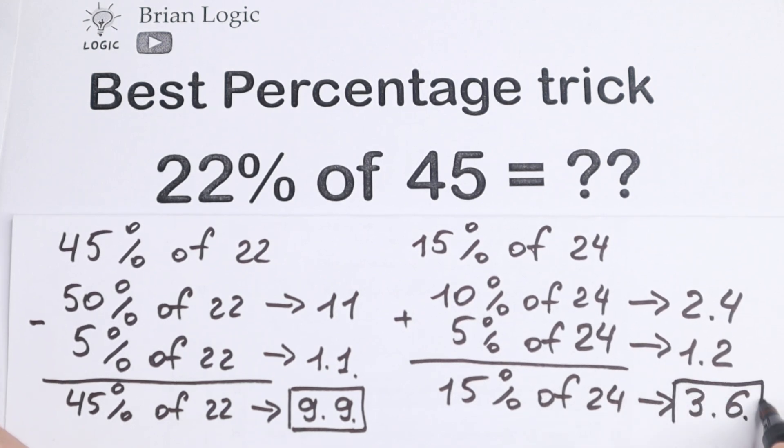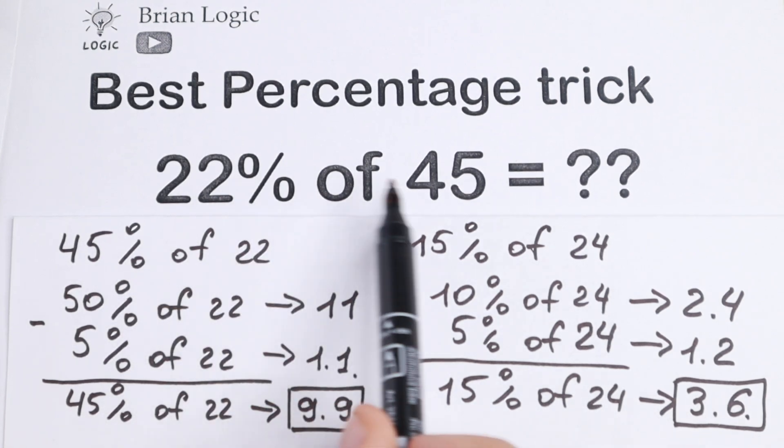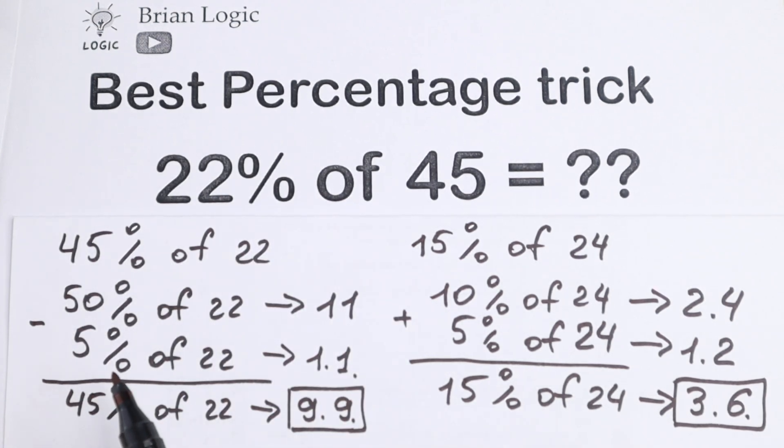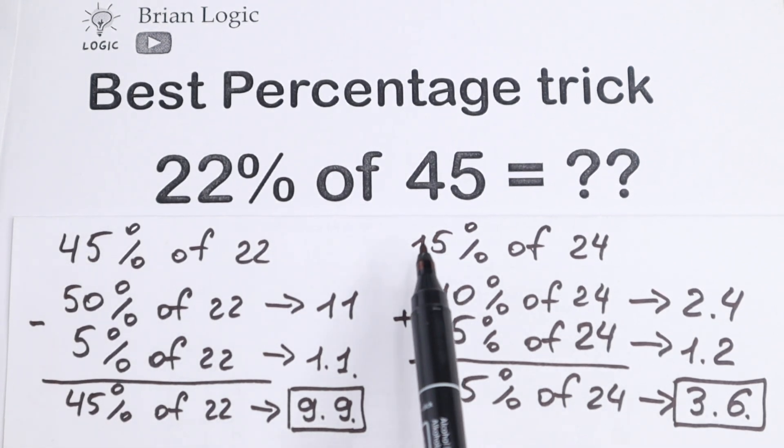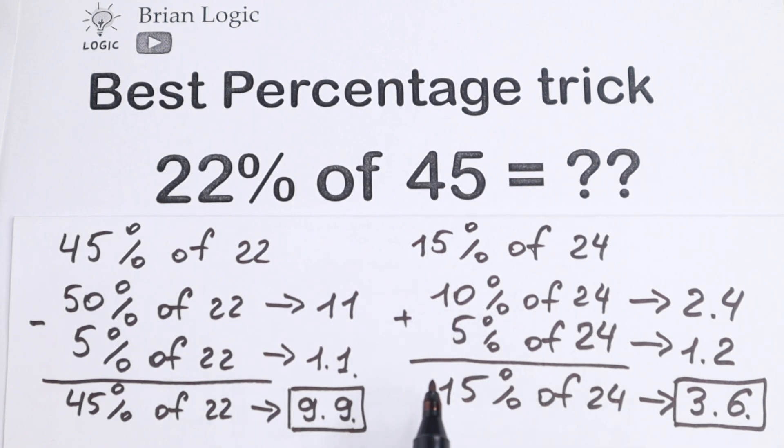This is the best percentage trick. We swap these two numbers. But if the percentage is not good, you can easily express it as, for example, 45 expressed as 50 minus 5, 15 expressed as 10 and 5%, or 5% as 10 minus 5, 24% as 20 plus 4.